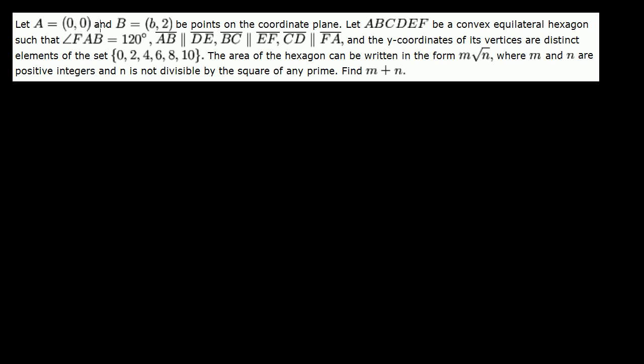Let A = (0, 0) and B = (b, 2) be points on the coordinate plane. Let A, B, C, D, E, F be a convex equilateral hexagon.